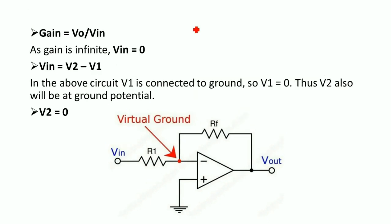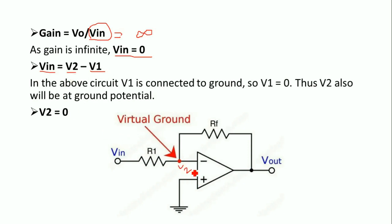We know that gain is represented as output voltage divided by input voltage. For an op-amp the gain is infinity, which means the Vin term becomes zero — when Vin becomes zero the gain becomes infinity. The Vin voltage is given as V2 minus V1, where V2 is the node voltage at the negative terminal and V1 is the voltage at the positive terminal. We already know V1 is at ground potential, so V1 equals zero, and since gain is infinity Vin also equals zero.